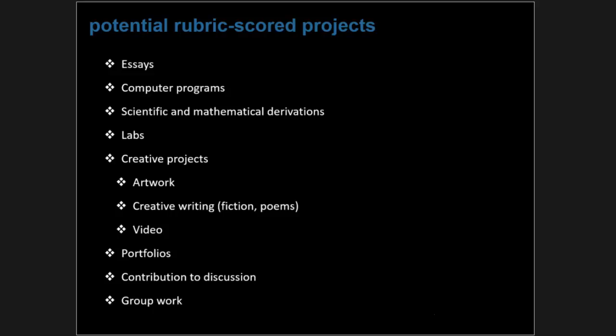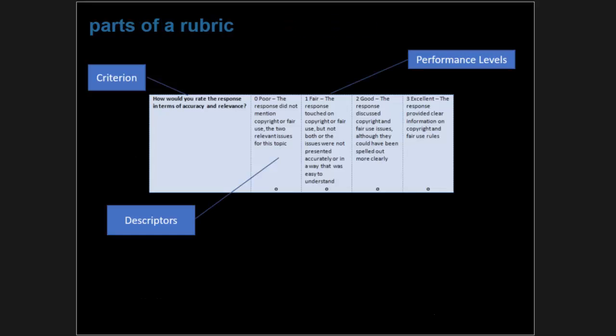Let's get deeper into the components of a rubric. A rubric begins with criteria — the thing you're evaluating, usually based on a learning objective. The criteria appear on the left side of the rubric. Along the top you see performance levels; this particular rubric rates people from zero to three, ranging from poor to excellent. The rubric performance levels each spell out a level of skill that evidence will determine where people fall.